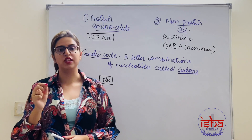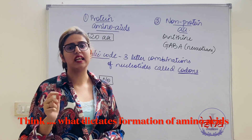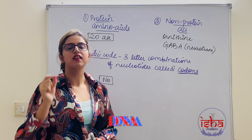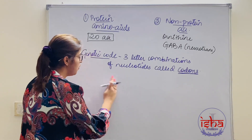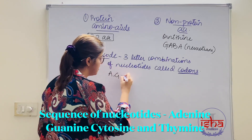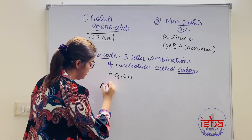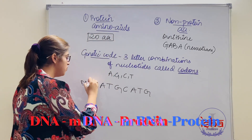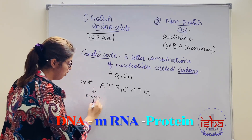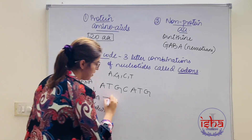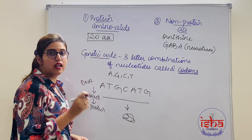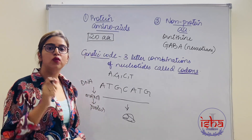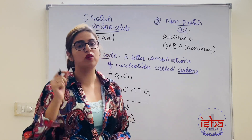The amino acids that form proteins are only 20, and everything in our body is dictated by our genetic material — DNA. DNA is a sequence of nucleotides: adenine, guanine, cytosine, and thymine. This DNA forms mRNA, and the mRNA directs the formation of protein. For the formation of protein, the building block required is the amino acid.